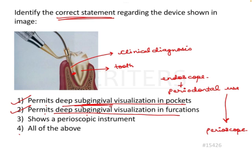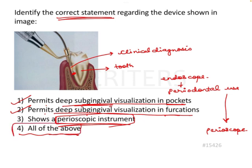Option three: shows a perioscopic instrument. Since we know two options are correct and the fourth option is 'all of the above,' the third option is also correct. Actually the third option should be the one guiding you to the others — because it is a perioscope, it helps in visualisation of pockets and furcation. So the answer to this question is all of the above.